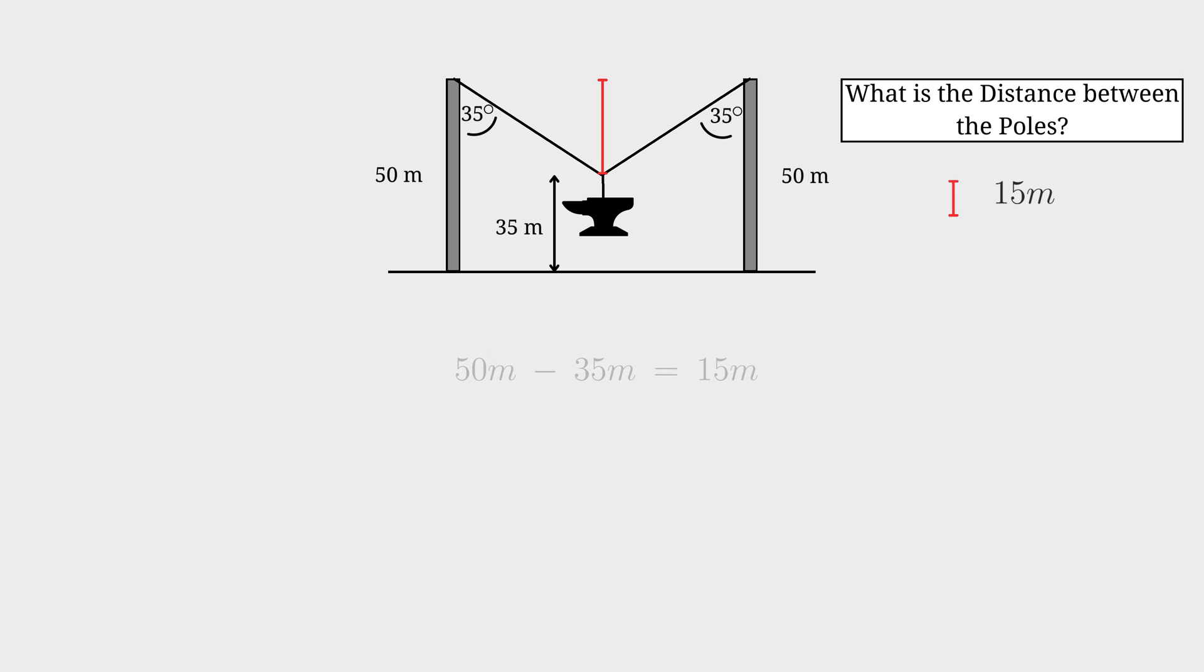Since some of the angles are known we can make a right angle triangle like so, shown in green. Because this figure is symmetrical we can reflect this triangle to the right hand side. We already have one side of the triangle which is 15 meters.